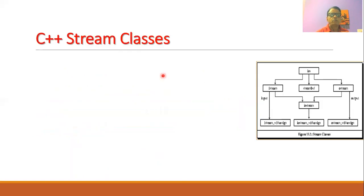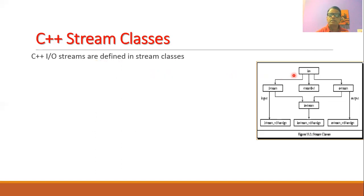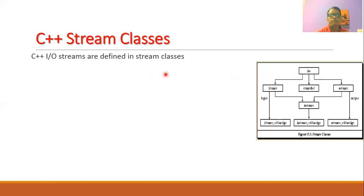Now let us understand about the stream classes, or where these input and output streams are defined. In the C++ compiler, input/output streams are defined in the stream classes as shown in this diagram. ios is the base class, where 'i' stands for input, 'o' stands for output, and 's' stands for stream. From this base class we can have the input stream (istream), output stream (ostream), and the stream buffer. ios is the base class that contains the basic facilities used by all input and output classes in C++.